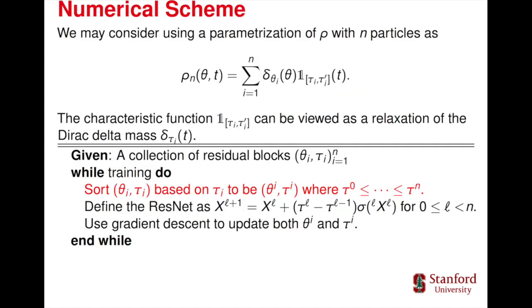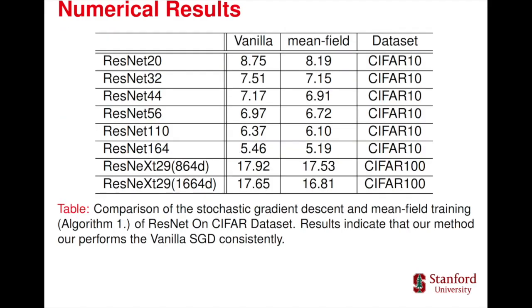We consider the ResNet as an alternative way to approximate the mean field model we proposed. The only difference in our algorithm is that we need to have a sorting in every forward propagation in order to let every layer be symmetric. This single line of code helps us achieve better results on benchmark datasets.